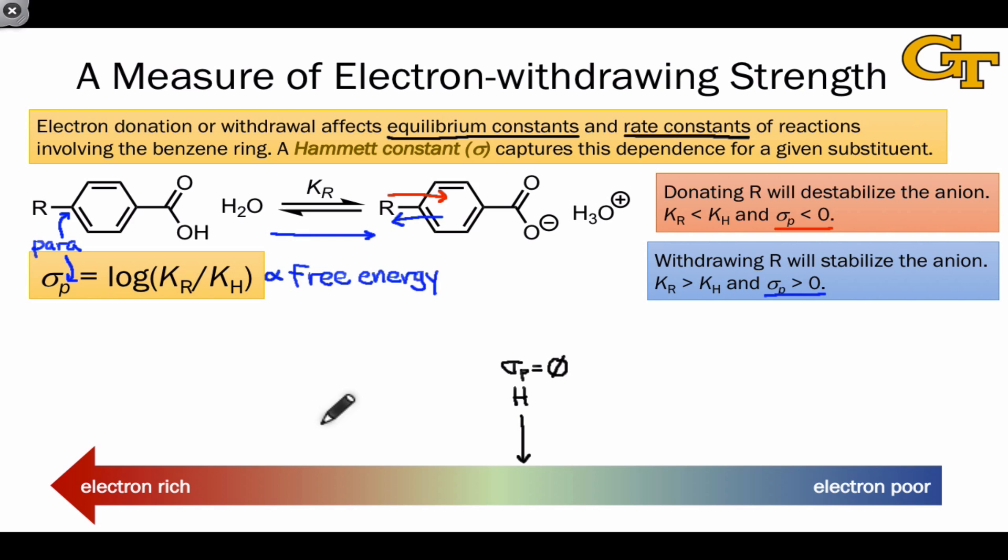Strongly electron-withdrawing substituents, strong electron-withdrawing groups, are going to have sigma-P values that are much, much greater than 0 due to their strong stabilization of the negative charge. These will be things, for example, like the NO2 group, the nitro group. On the other hand, strongly electron-donating substituents are going to be associated with highly negative sigma-P values. These would be things, for example, like the amino group.